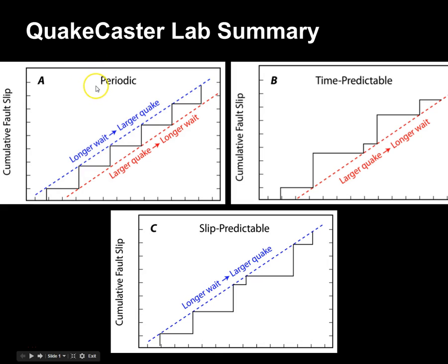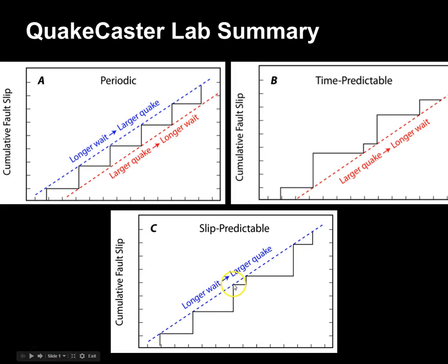Here are the three theories that we looked at: that earthquakes are just periodic; that they're time predictable, which means the larger the earthquake, the longer the wait until the next one, or the smaller the earthquake, the shorter the wait; or slip predictable.